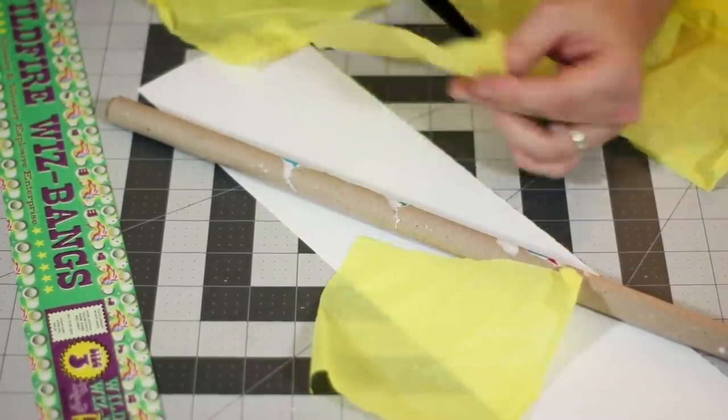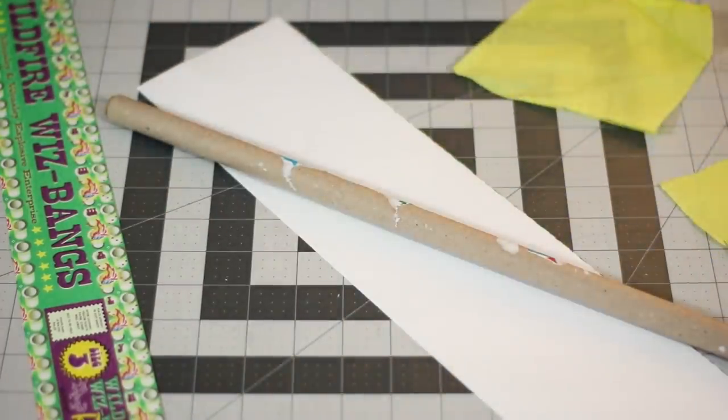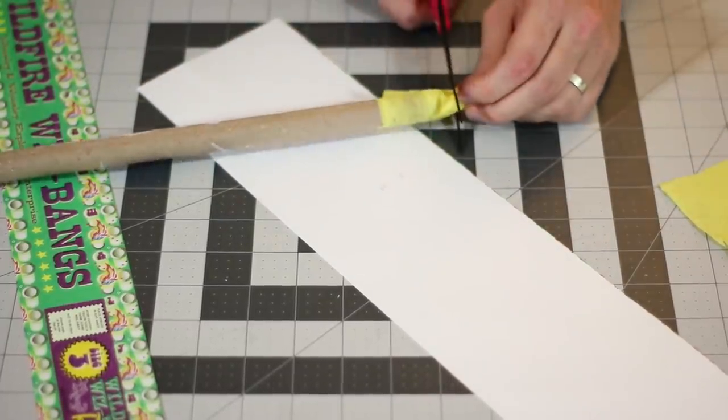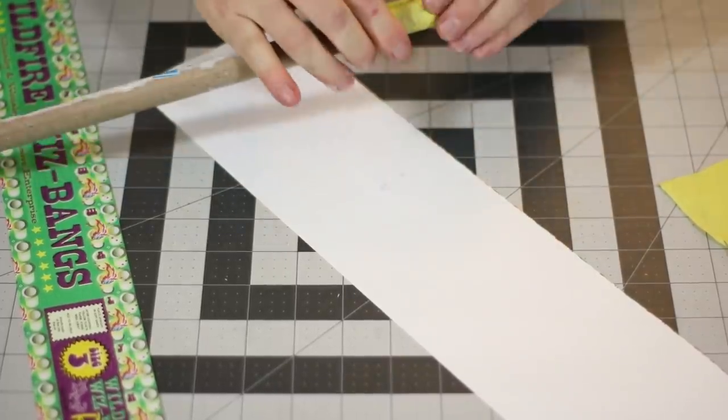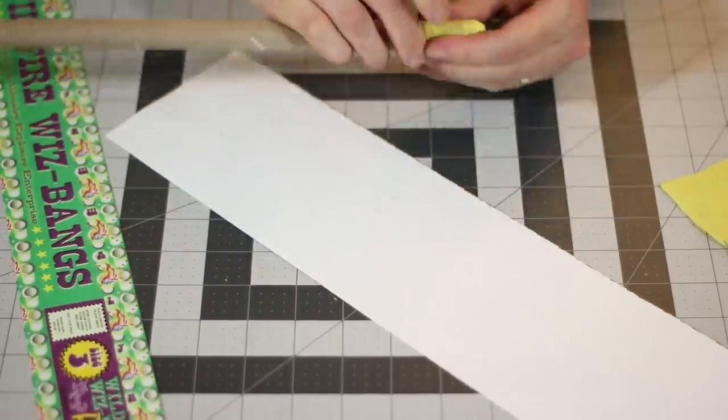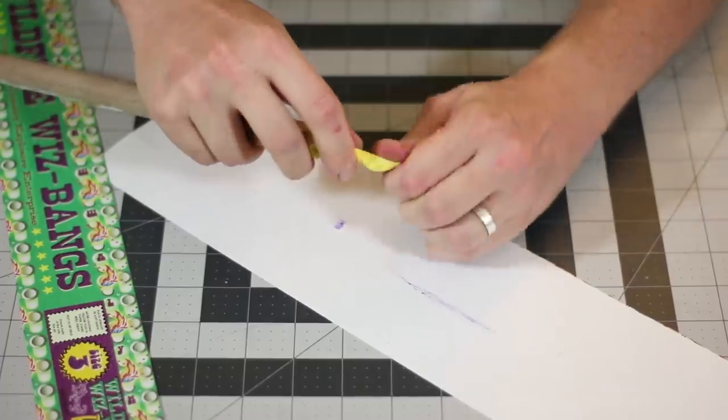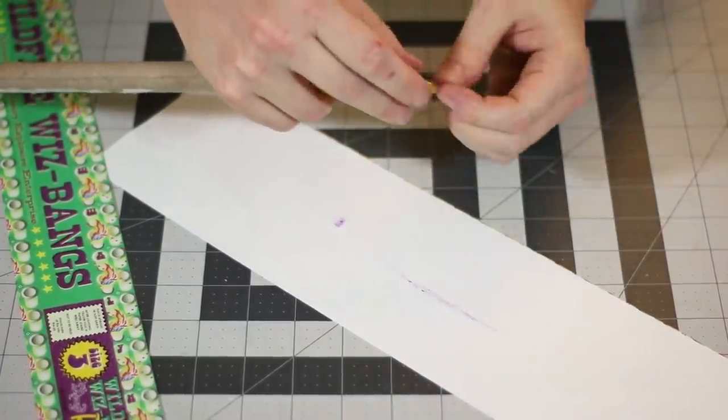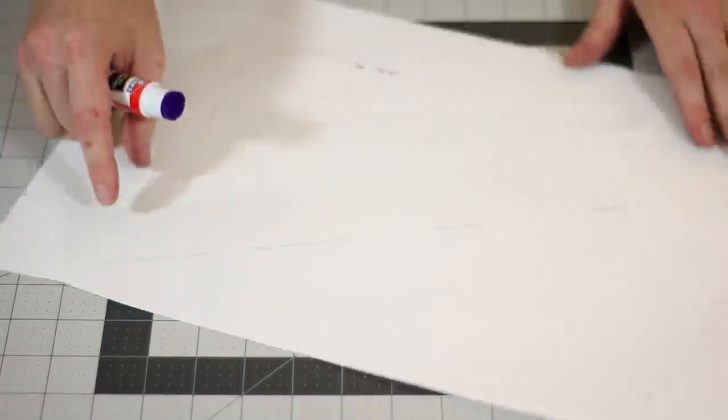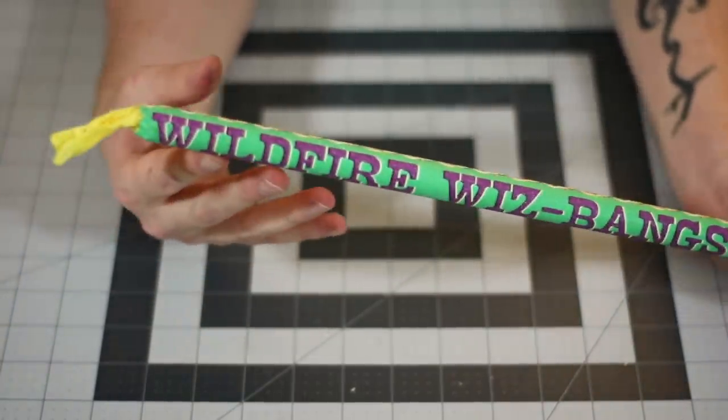One's going to go on the top. The other will go on the bottom. For the one that's on the bottom, you can actually cut off most of the excess. This one, we're just going to kind of twist and tuck inside of it like this. The one that goes on the top, we're just going to sort of twist just like we did on the fountain. Now we're ready to glue the label on. So your wildfire whizbang should look something like this.